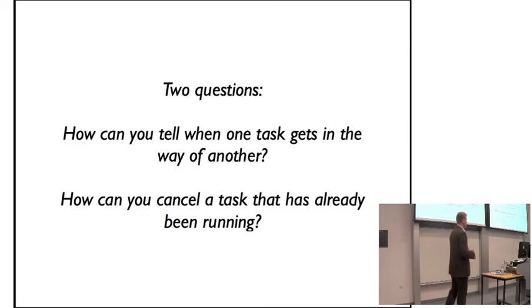So that brings up two questions. It sounds like magic. How can you tell when one task gets in the way of another, and how can you cancel a task that's already been running? You've already drawn half your route onto the board. If you try and take that away somehow, are you going to get in the way of other tasks by trying to delete it? And how do you know when one task is getting in the way of the other, if you're just letting them just write to the shared state, however they like?